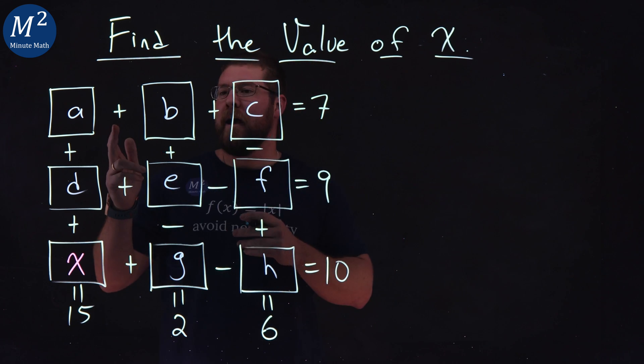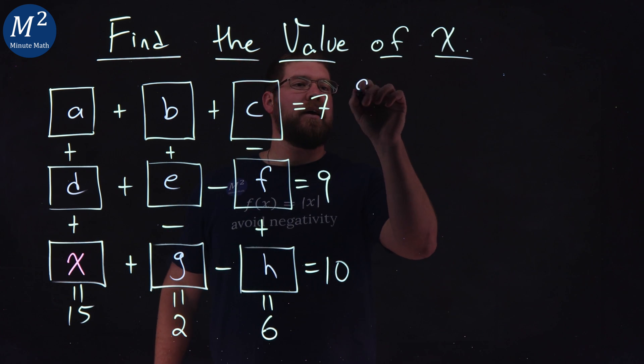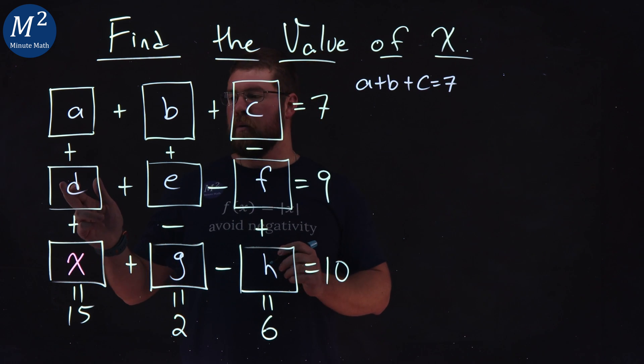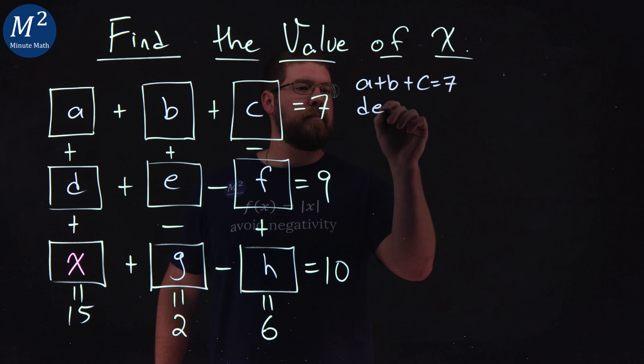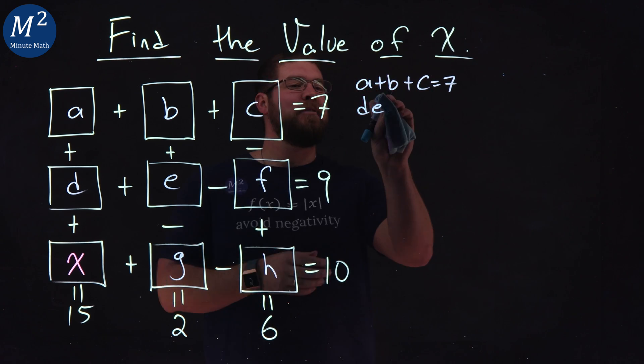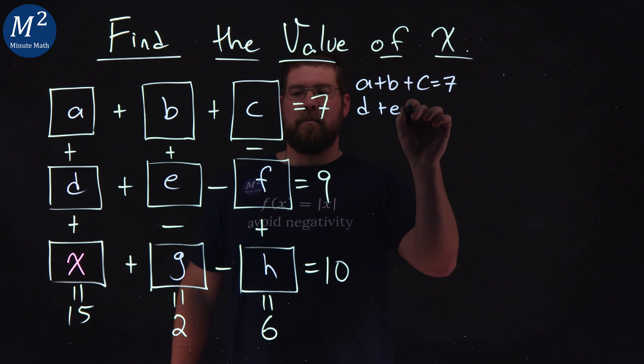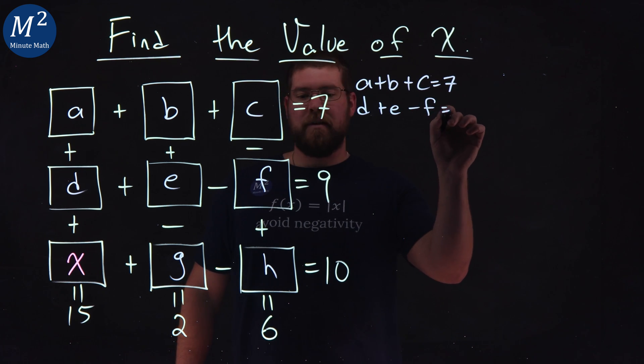All right, let's go write out what we know. A plus B plus C, so A plus B plus C is equal to 7. Keep on going. D, E, F. Oh, D, E, now D plus E minus F equals 9.